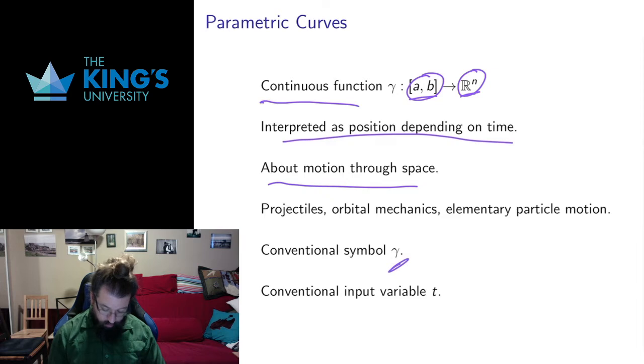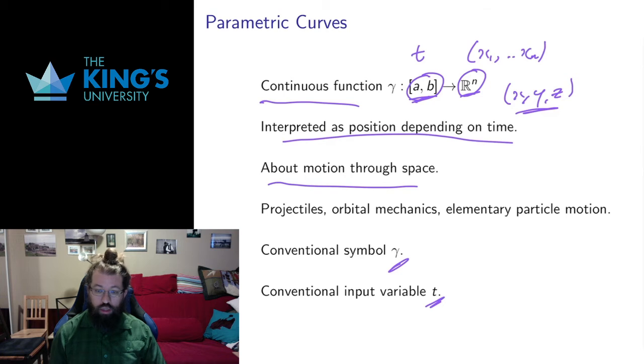The conventional symbol for a generic parametric curve is gamma, and the conventional input variable is t, and that's important to keep things straight, because here we're going to have t and here we're going to have variables x1 up to xn, or if it's R3 we're going to have xyz. We want to make sure that this variable doesn't mix up with these variables. We also want to signal that it's supposed to be depending on time. So the conventional input variable is t.